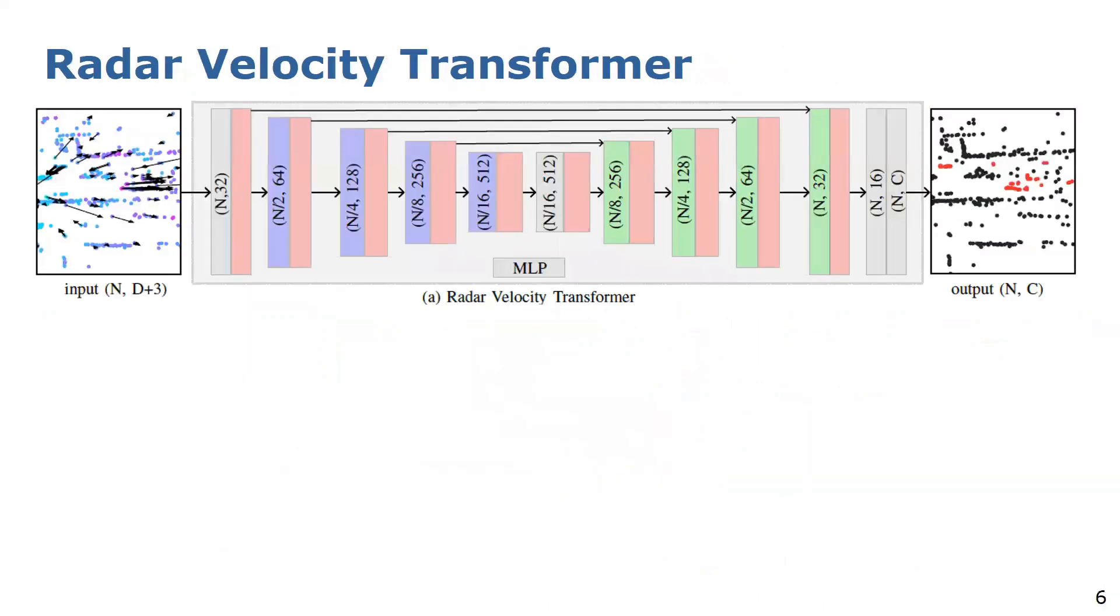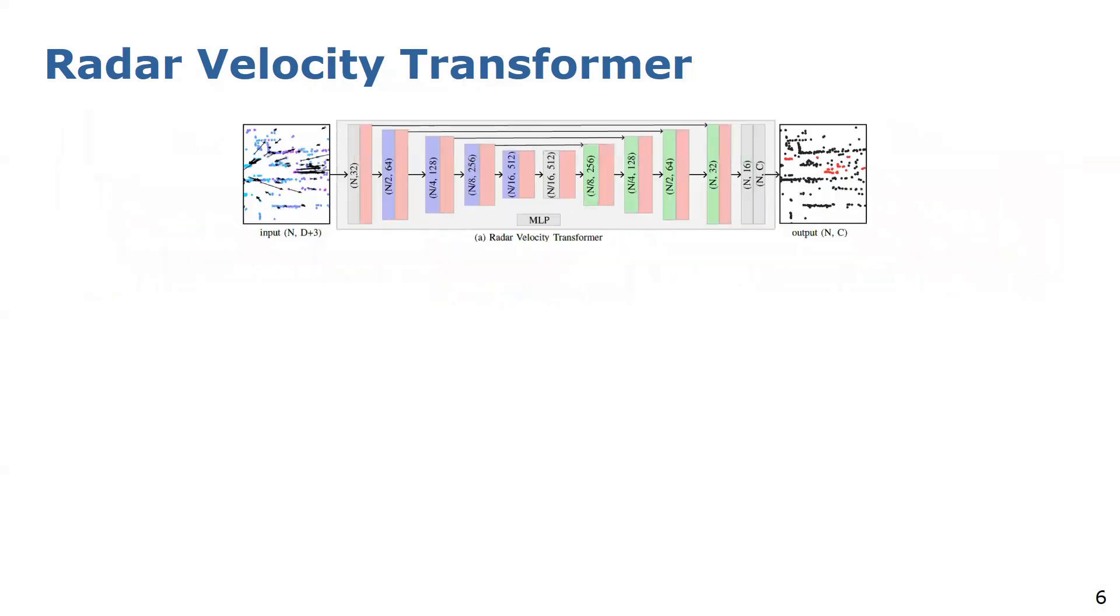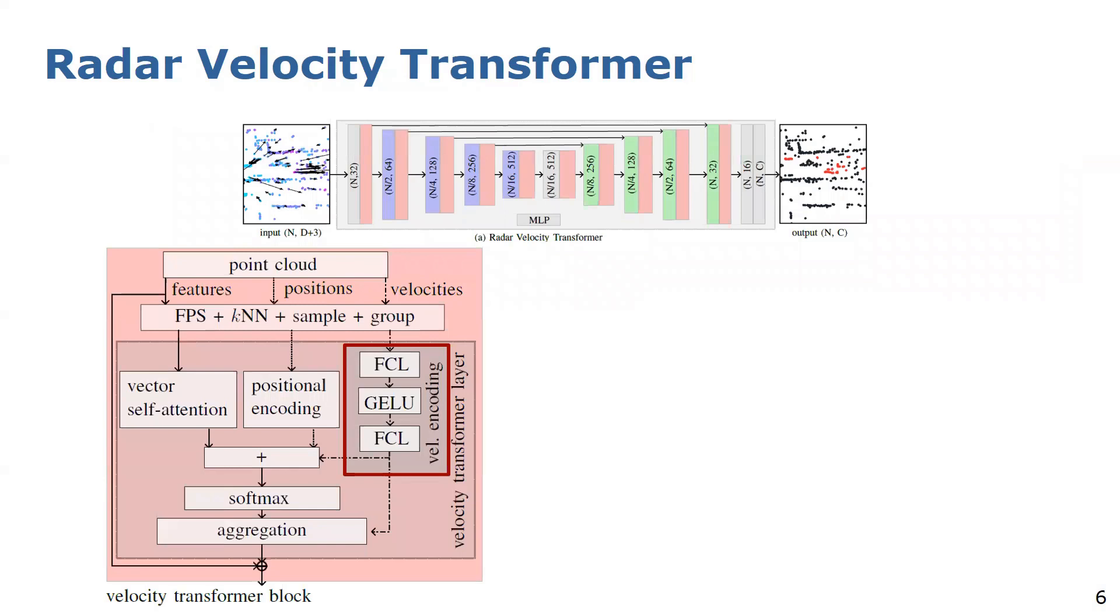The overall architecture of our radar velocity transformer follows the U-net shape with skip connections to process single-scan radar data with x and y coordinates, the Doppler velocity and the RCS value as input data. We predict the semantics of moving and static detections within the scan. The network comprises the velocity transformer block in red and up and down sampling modules in blue and green. The central part of our proposed architecture is the velocity encoding throughout the whole network to include valuable motion information and directly differentiate between moving and static parts of the environment.